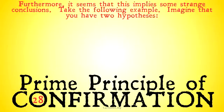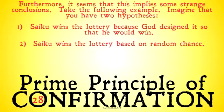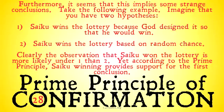Objection 28: furthermore, this seems to imply some strange conclusions. Consider the following example. Imagine you have two hypotheses: one, Sekou wins the lottery because God designed it so that he would win; two, Sekou wins the lottery based on random chance. Now imagine that you observe that Sekou does in fact win the lottery. This is much more likely under hypothesis one than two — in fact, it's certain under one and extremely unlikely under two. And yet, according to the prime principle of confirmation, Sekou winning provides support for the first hypothesis, which is actually confirmed by Sekou winning the lottery.